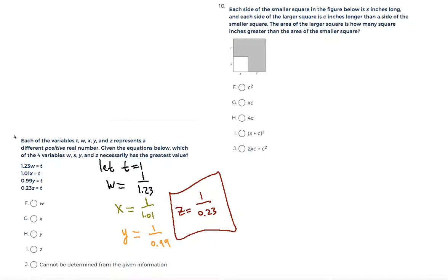Just think of this example: 1 fourth is greater than 1 eighth. But the denominator in 1 fourth is smaller than 1 eighth. So the smaller the denominator and the numerator has to be the same, obviously. That's why I said that t is equal to 1.